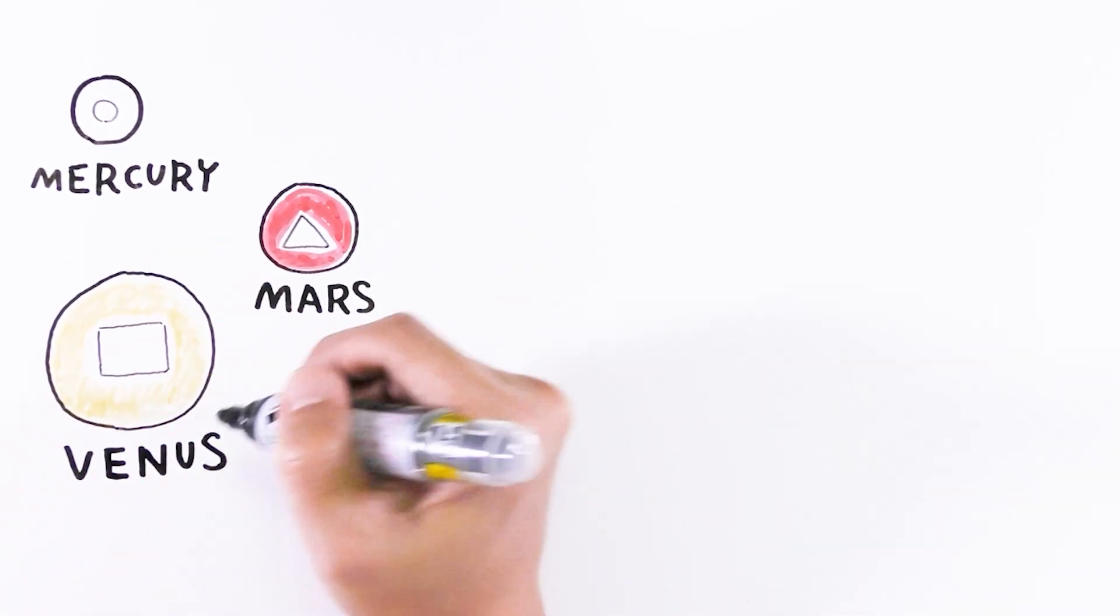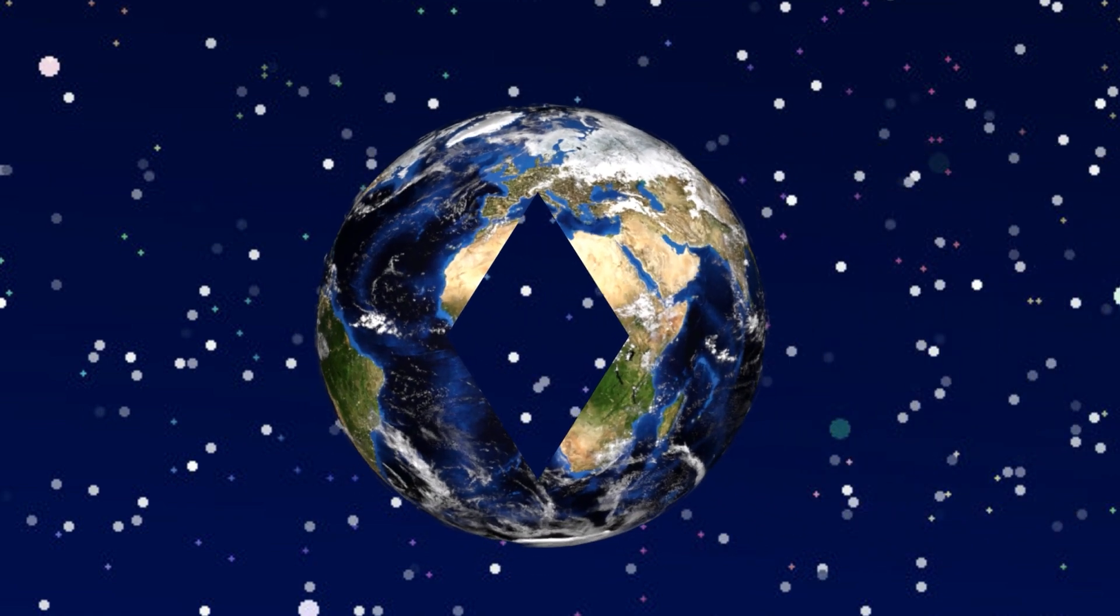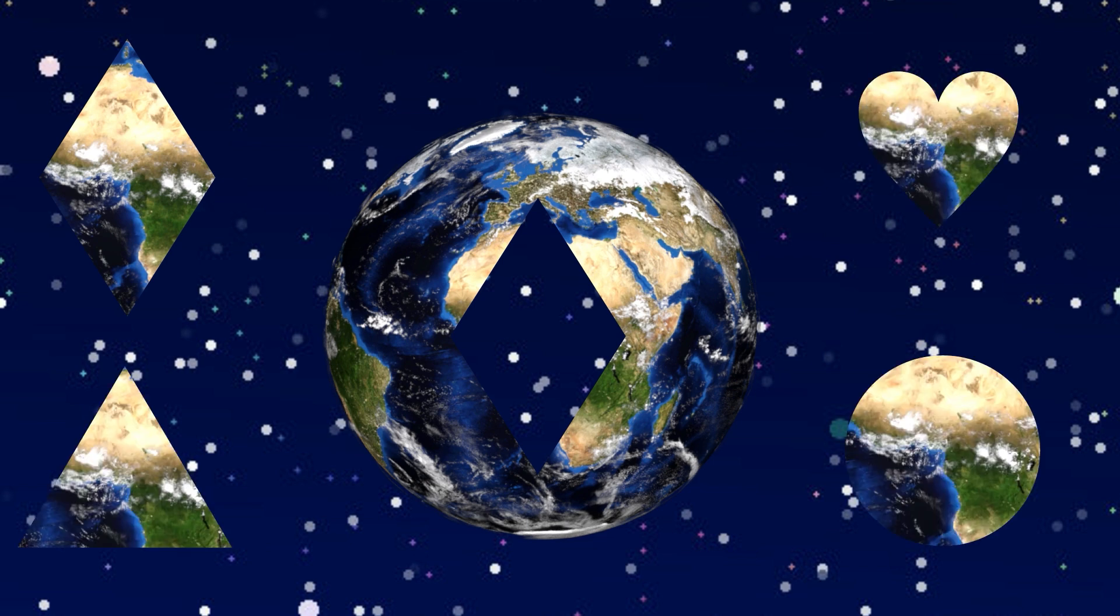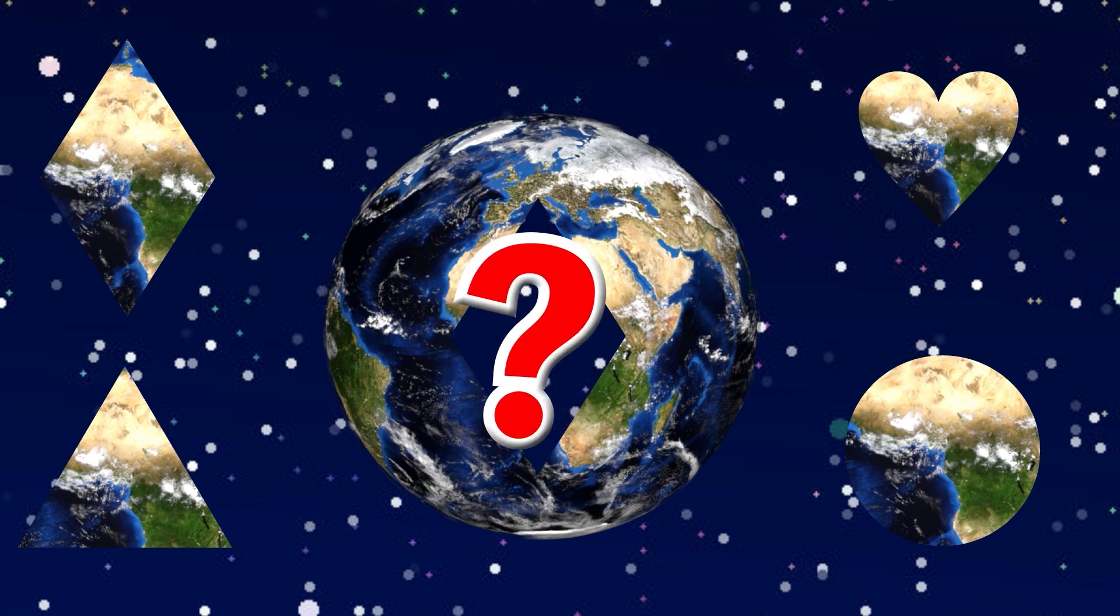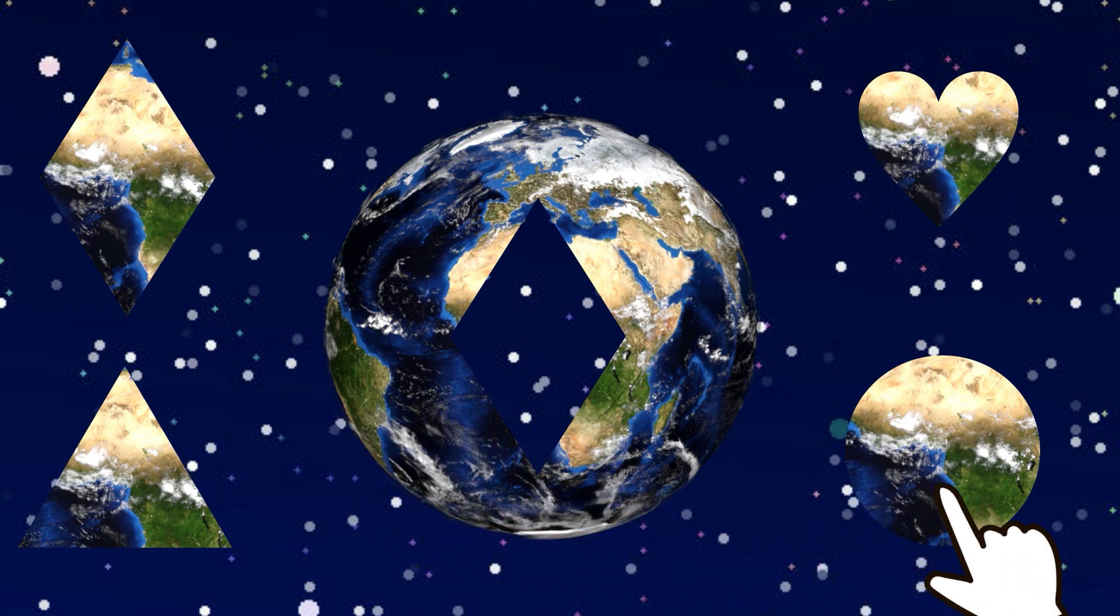Venus. Diamond, triangle, heart, circle. What is this? Okay. Circle.